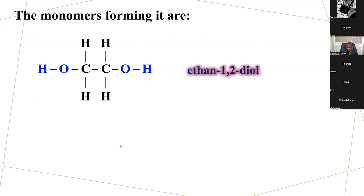We are going to have ethane-1,2-diol because it has two OH groups, one on the first carbon and one on the second carbon. Then we are going to have benzene, within benzene-1,4-dioic acid.